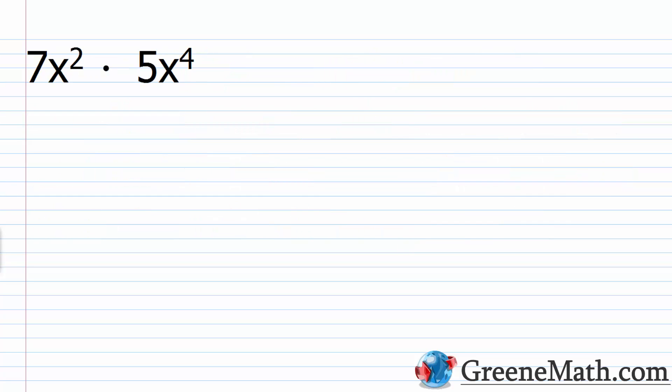The simplest case we'll come across is multiplying a single-term polynomial — known as a monomial — by another monomial. Here we have 7x squared times 5x to the fourth power: a monomial multiplied by a monomial, so it doesn't get any simpler than this.